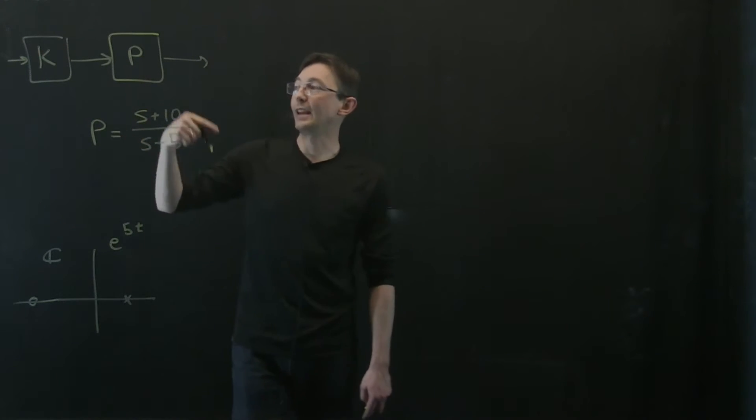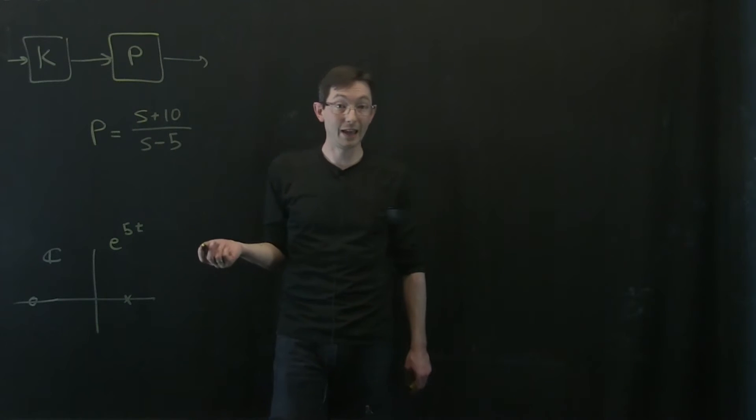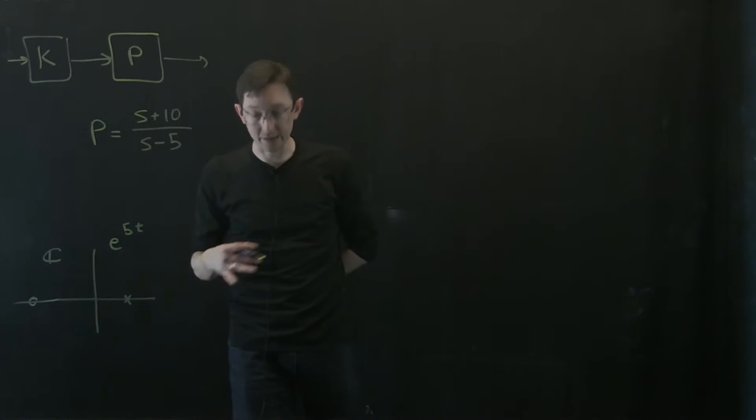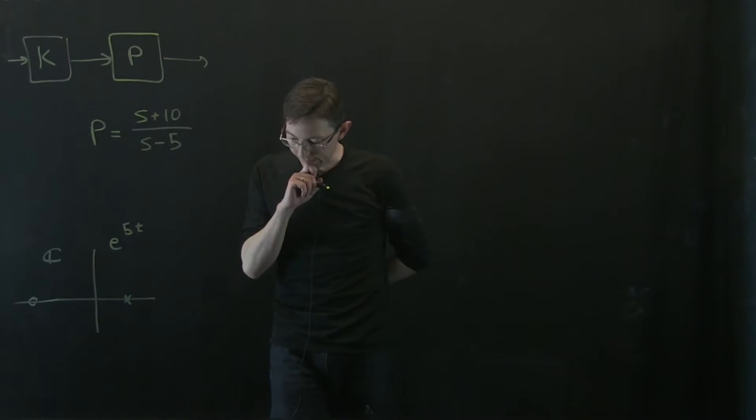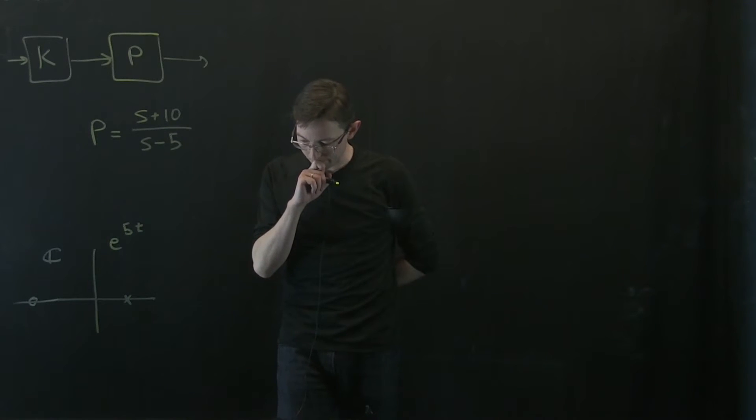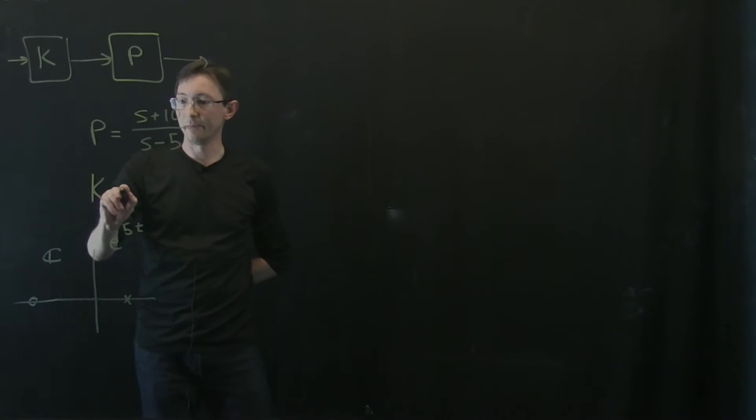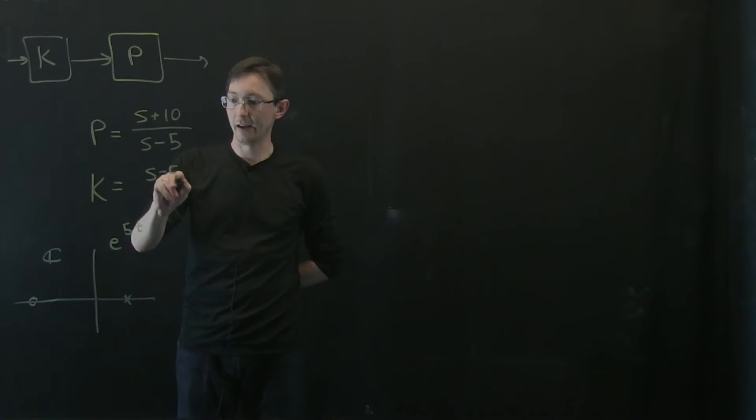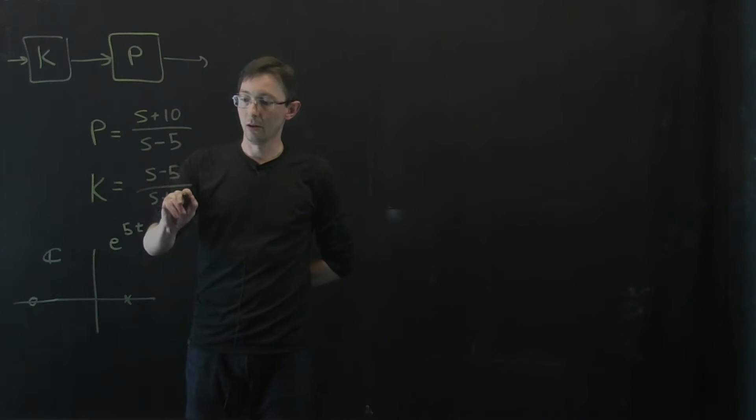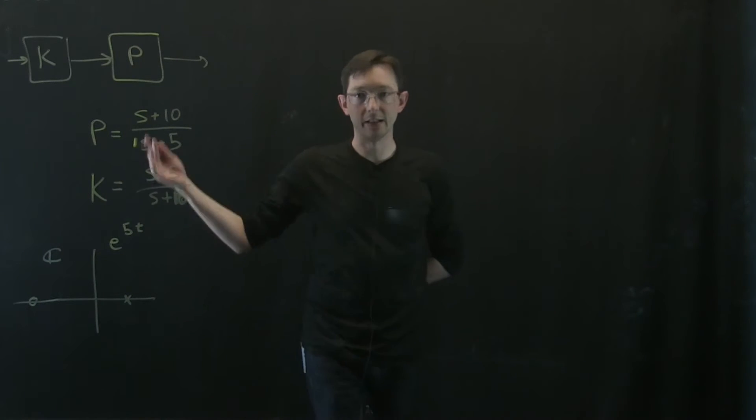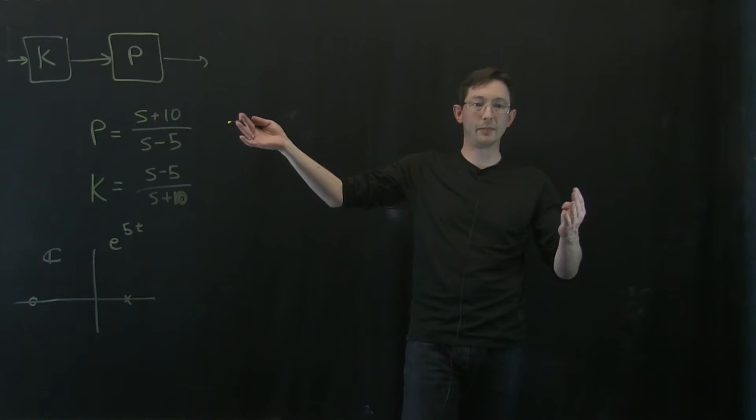If I try to invert this plant with K, we get into this terrible situation. So let's say I try to invert this and I say K equals S minus 5 over S plus 10. Sounds like a good idea. I can just multiply these. I get K times P equals 1.